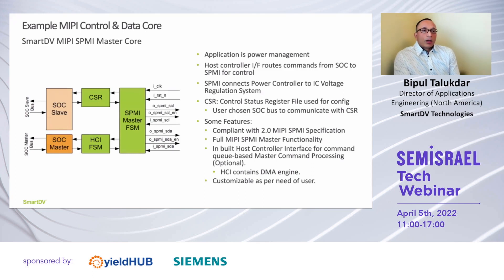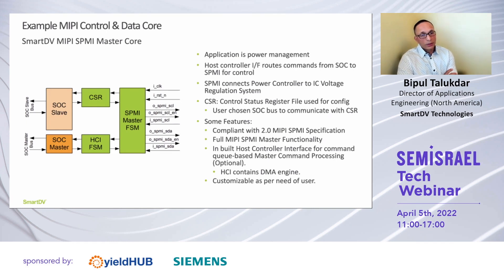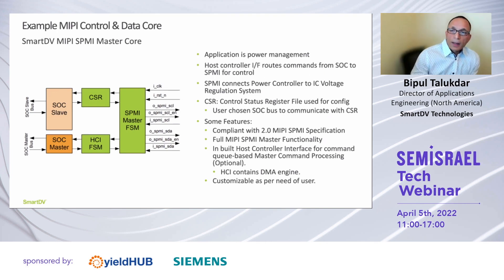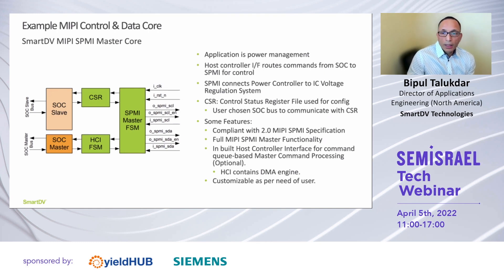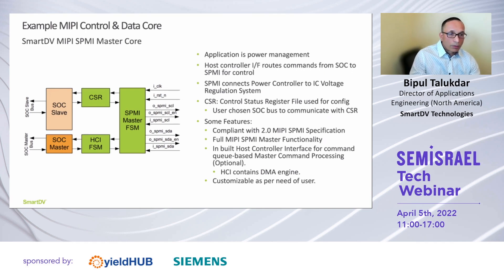Here is an example for our MIPI control and data core, which is the SPMI master core. The host controller interface sends and receives commands from the SoC and sends it to the master FSM of the SPMI core for SPMI interface control. The system power management interface connects a power controller of a CPU to an IC voltage regulation system, so it can monitor and control CPU performance levels. We also offer an ASPMI slave. However, we do not provide a master for that — apparently we are the only provider in the market for an ASPMI slave.